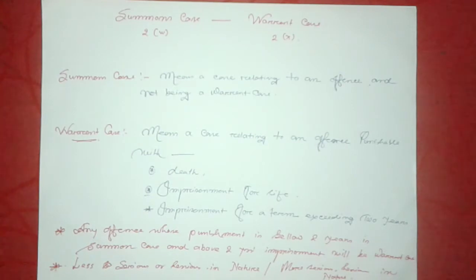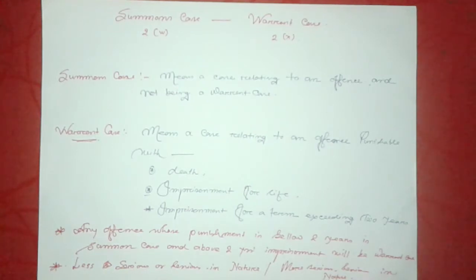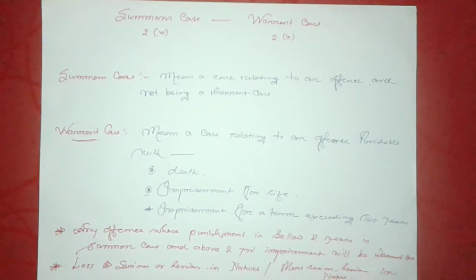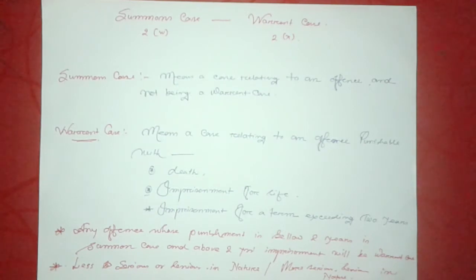Section 2X defines a warrant case. As per this section, warrant case means a case relating to an offense punishable with death, imprisonment for life, or imprisonment for a term more than 2 years. So after analyzing both definitions, we can draw a conclusion that any offense whose punishment is below 2 years is a summon case, and above 2 years will be a warrant case.